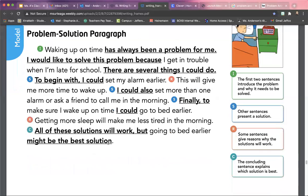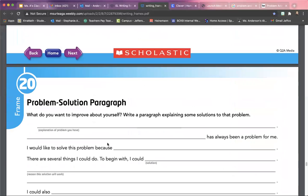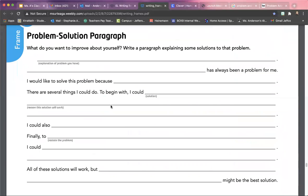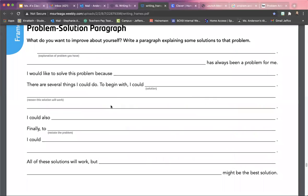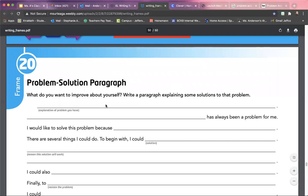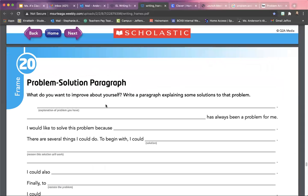So today you're going to think about your own problem. What do you want to improve about yourself? Is there something you'd like to work on? Me personally, sometimes running late - I will admit I sometimes have to work on that. Or having a sweet tooth, eating too many sweets - also a problem I work on. So today you're going to create your own problem and solution paragraph just using something about yourself.